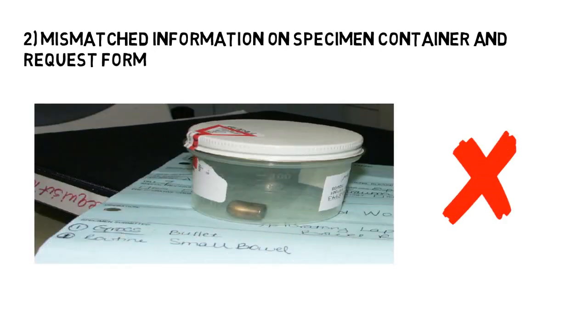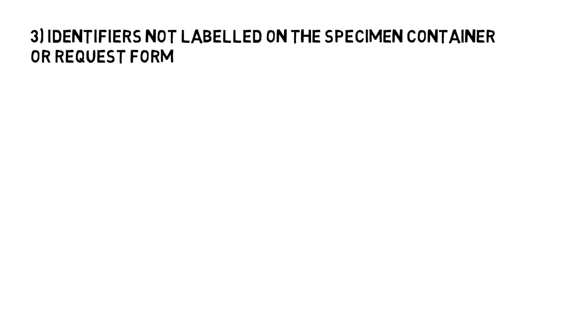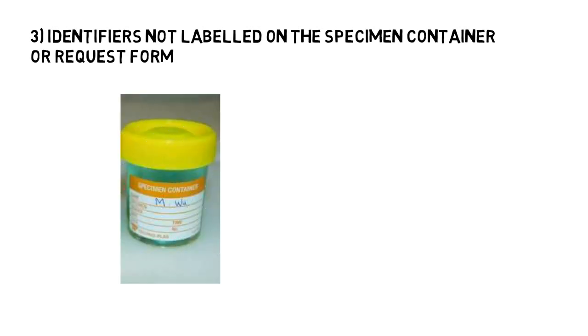Number three, both the specimen container and request form must be labeled with sufficient identifiers — for example, name, age and gender of the patient, lab identifier, date and time of surgical procedure, and specimen type or specimen site. Keep in mind that such details should not be written on the lid of the specimen container.